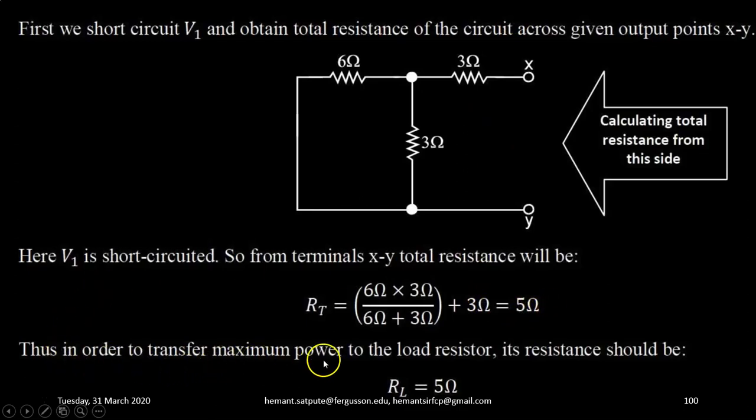Thus, in order to transfer maximum power to the load resistance, its resistance should be equal to 5 ohm. This load resistance must be equal to the equivalent resistance, which is 5 ohm. So, when RL equals 5 ohm, then maximum power will be transferred to the load. This is the meaning in short.